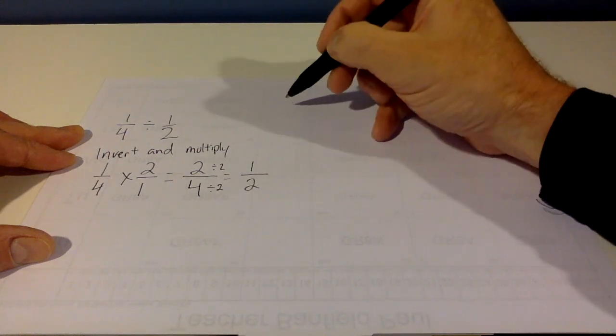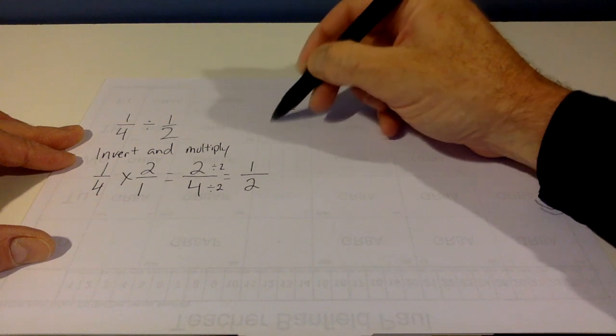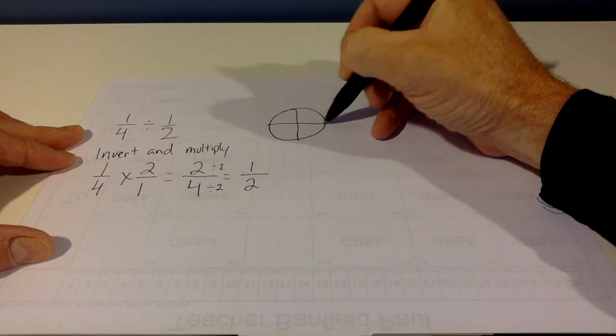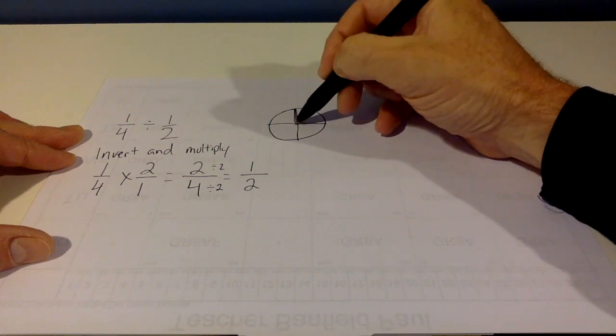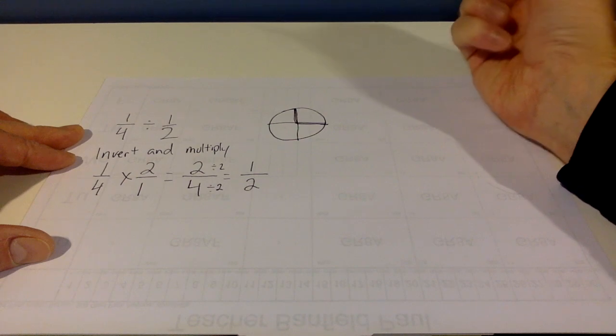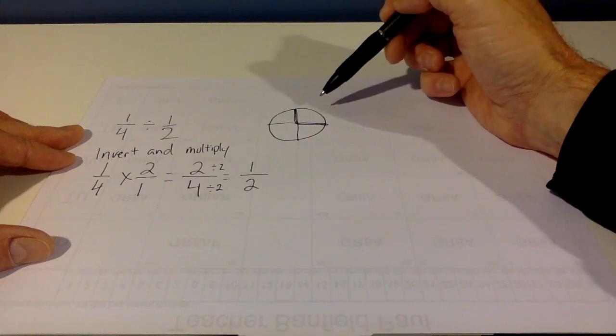And another way to look at this is, if we have 1 quarter, say, again, this quarter up here, and we're trying to divide it by half, well, think about it this way.